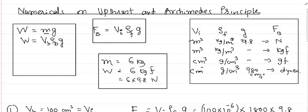Similarly, upthrust — which we denote by FB, the buoyant force — is given by VI × ρF × g, where VI is the immersed volume. It is very important to note that here we have the total volume of the body for weight, whereas for upthrust we use the immersed volume of the body, multiplied by density of the fluid ρF and g.